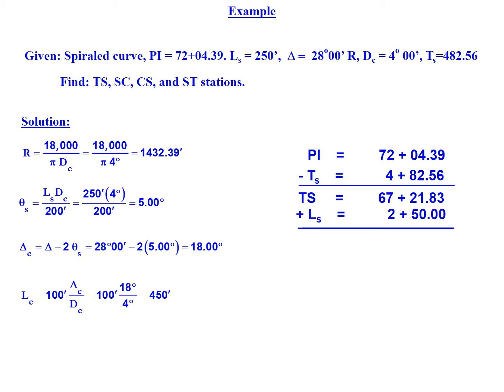We're going to add to our TS point the length of the spiral of 250 feet to get the SC point which is 69 plus 71.83.